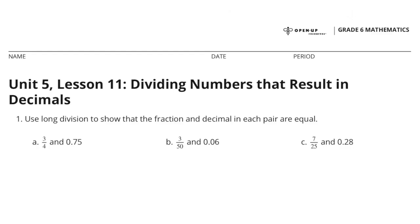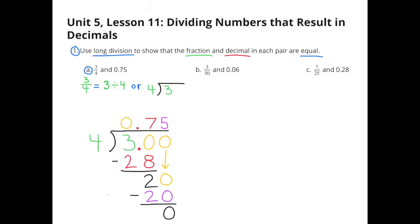Unit 5, Lesson 11: Dividing Numbers that Result in Decimals. Number 1: Use long division to show that the fraction and decimal in each pair are equal.